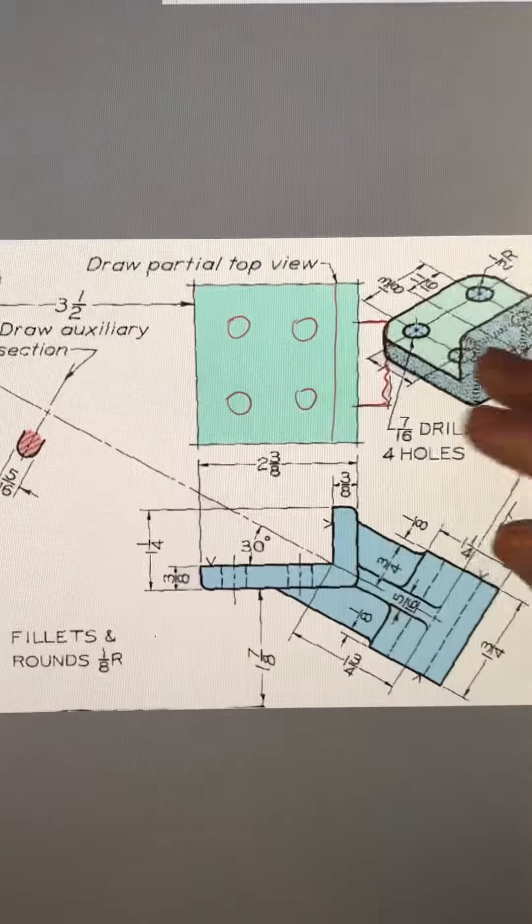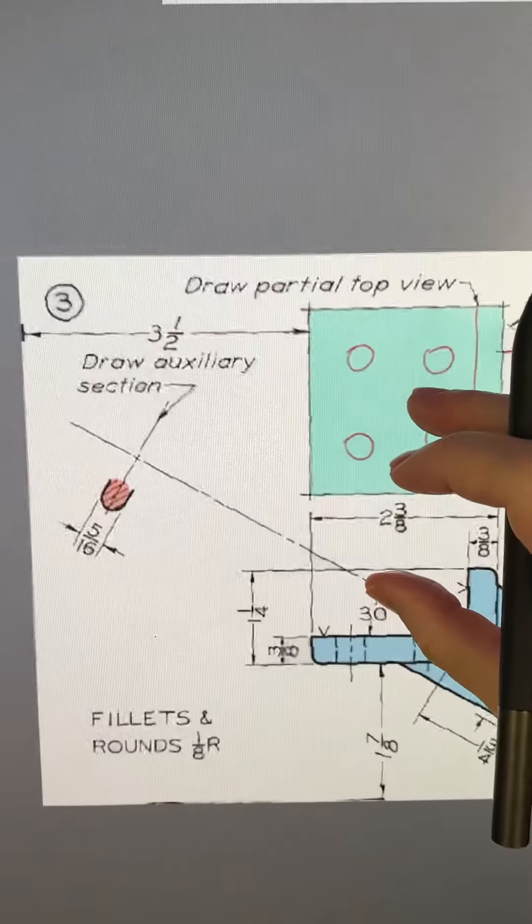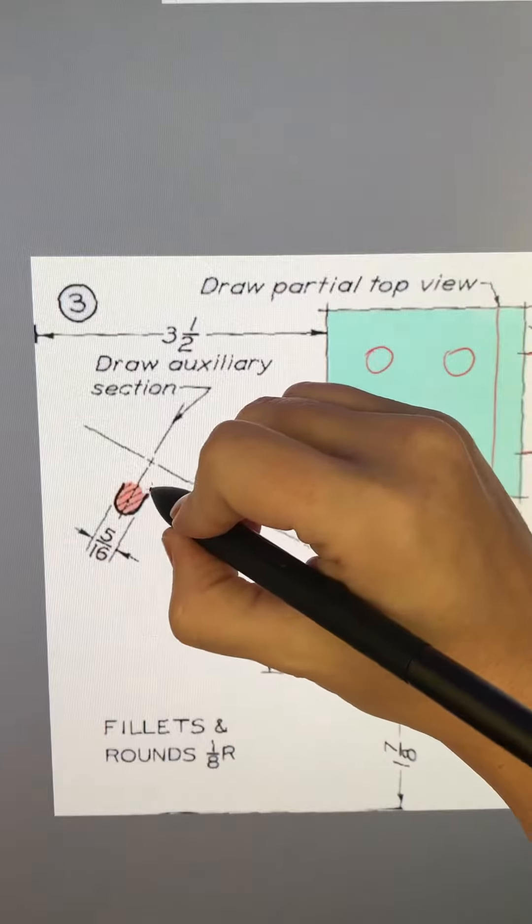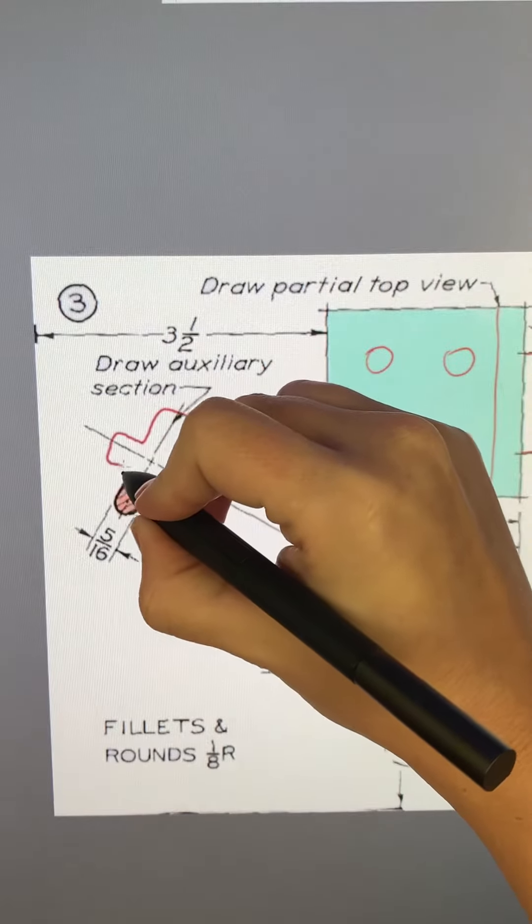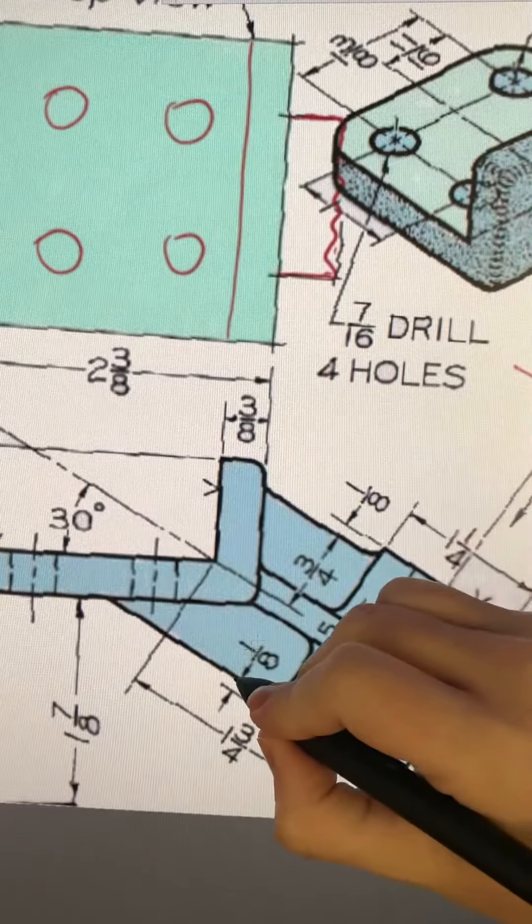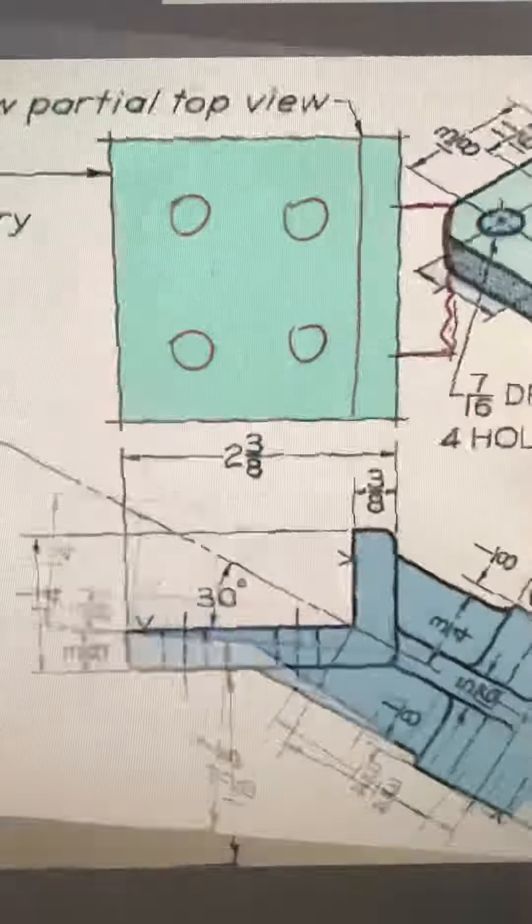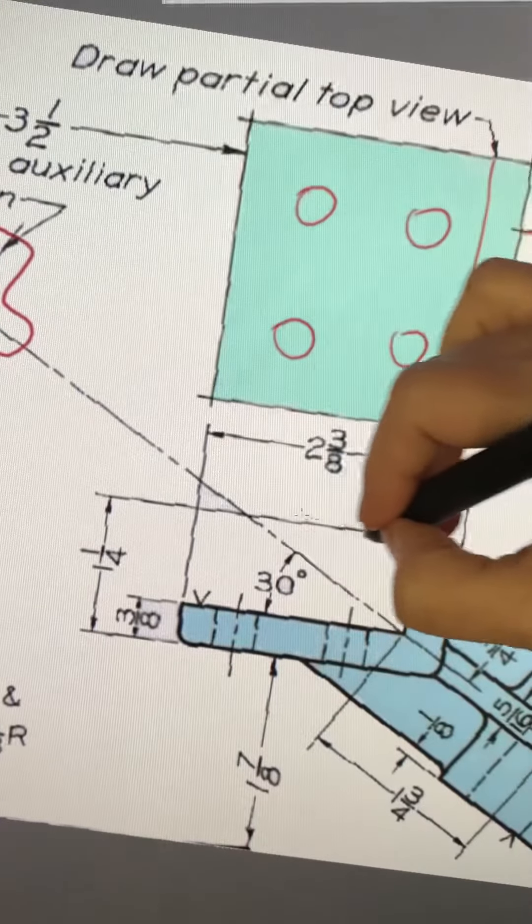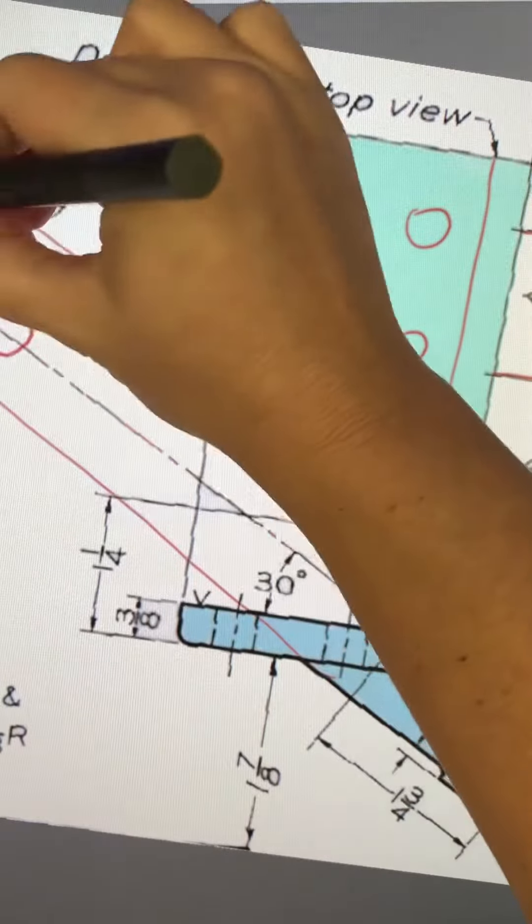And then you're going to have an auxiliary section. So what you have to do with the auxiliary section - this is showing you the shape of the webbing. The top portion is this width, so you'll pull that straight out to get the top and the bottom. This distance...